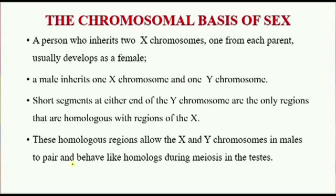Short segments at either end of the Y chromosome are the only regions that are homologous with the regions of X — the short ends. And so the rest differ remarkably.